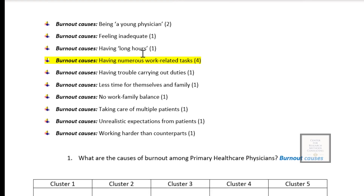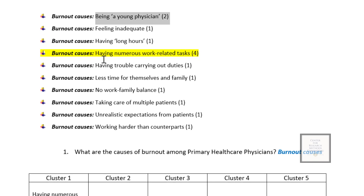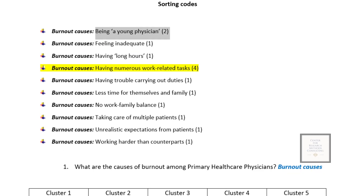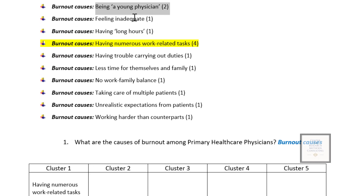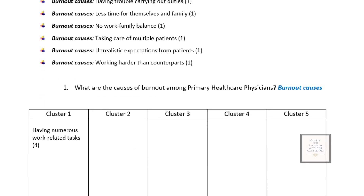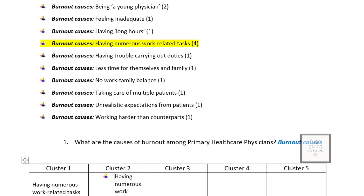After placing the dominant code, go through the remaining codes from first to last. The first code, 'being a young physician,' was generated as one of the causes of burnout. Does it have anything to do with 'having numerous work-related tasks'? I don't really think so, so I'll put it in the second cluster since it doesn't have a very close relationship with the first one. I copy it and paste it there.